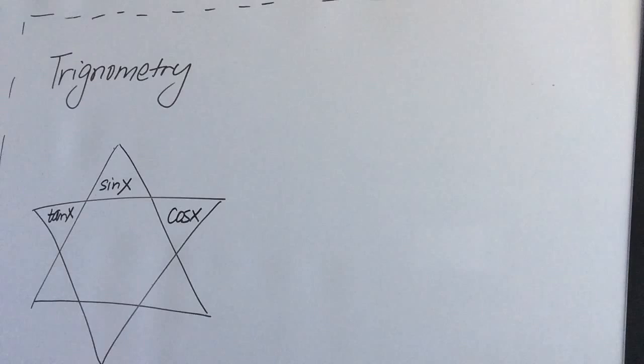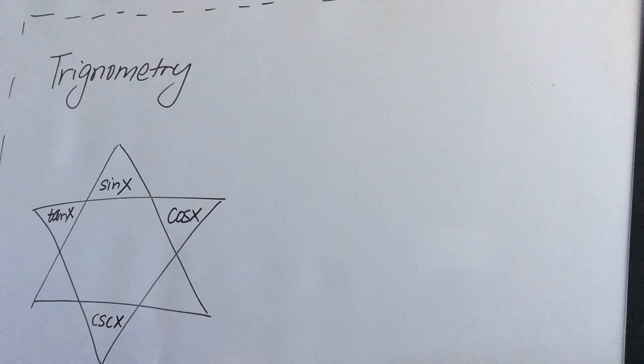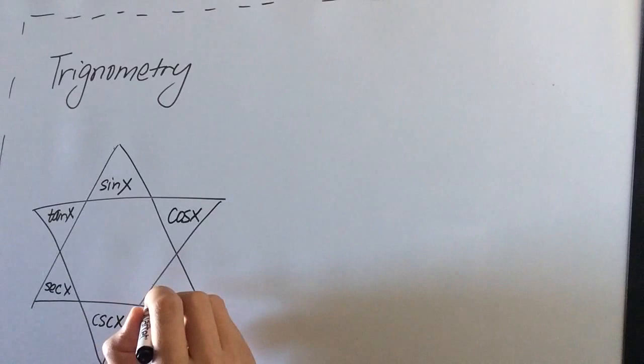The next task is to put the reciprocal to the opposite position. So for sine x, we will have cosecant x. For cosine x, we'll have secant x. And tangent x is cotangent x. And we have this. This is very easy to construct. And what's the power of this?